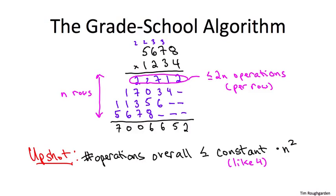For example, if you double the size of the input, if you double the number of digits in each of the two integers that you're given, then the number of operations you will have to perform using this algorithm has to go up by a factor of 4. Similarly, if you quadruple the input length, the number of operations is going to go up by a factor of 16 and so on.